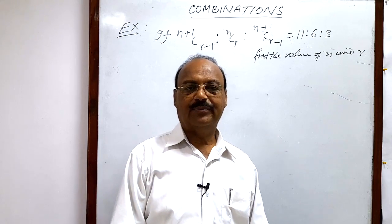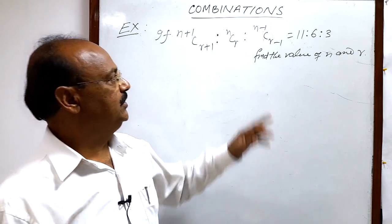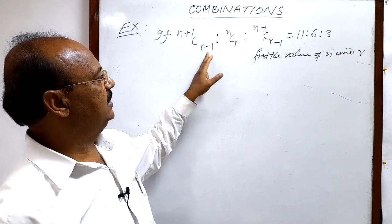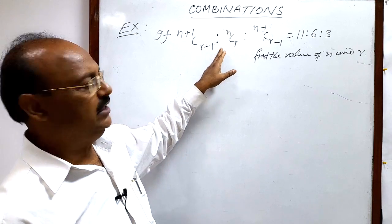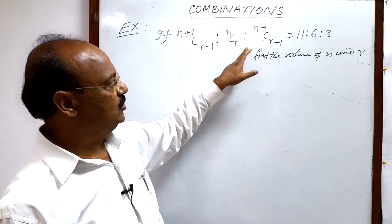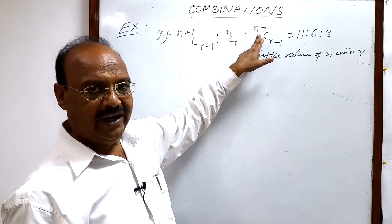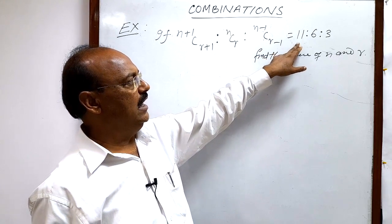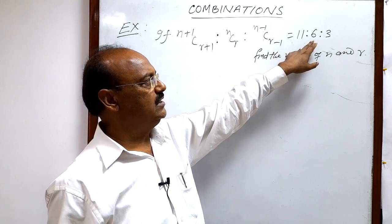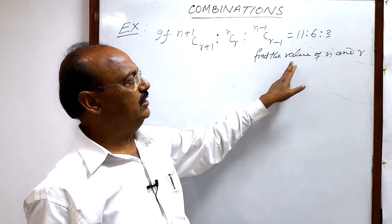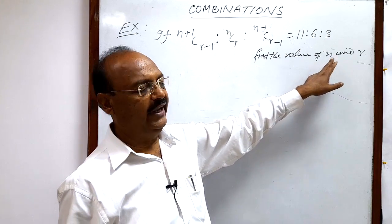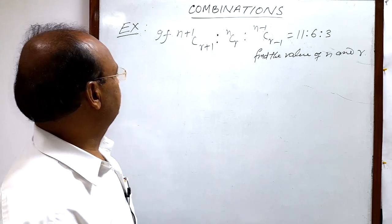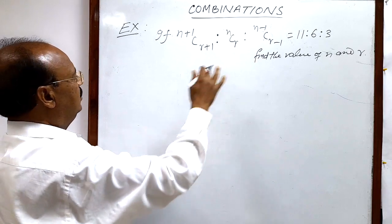Let us see a question from the topic combinations. The question is: if (n+1)C(r+1) : nCr : (2n-1)C(r-1) is equal to 11:6:3, then find the value of n and r.